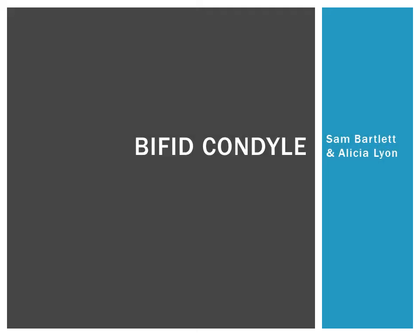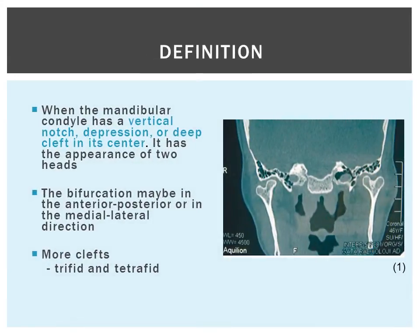Hi, this is Alicia Lyon and Sam Bartlett, and our presentation is on bifed condyle. The definition of a bifed condyle is when the head of the mandibular condyle has a vertical notch, depression, or deep cleft in its center, giving it the appearance of having two heads.